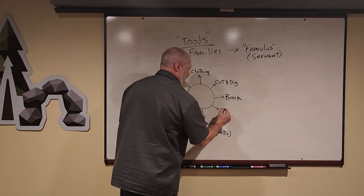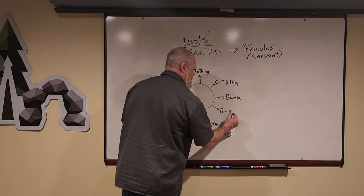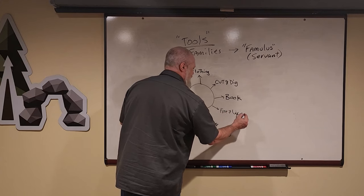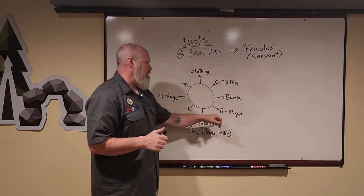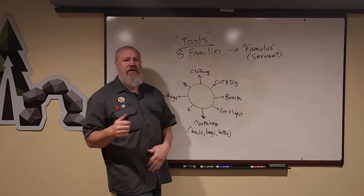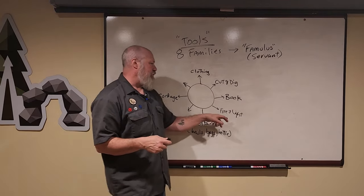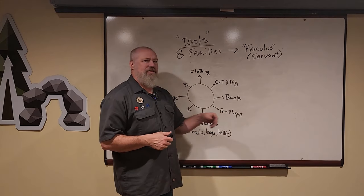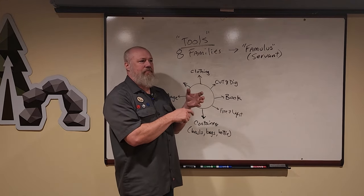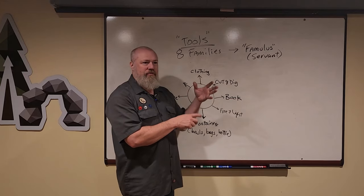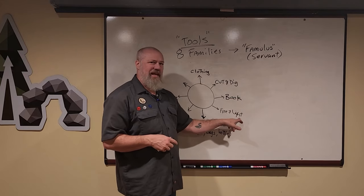You've got a fire and light family. The fire and light family is obviously different ways to start fire, your ferrocerium rod, your lighter, your flint and steel, your bow drill, and lights. So torches, glow sticks, literal candles, or our favorite, just the headlamp.